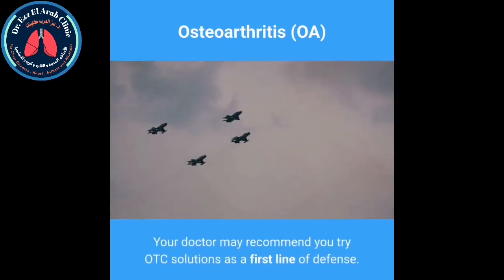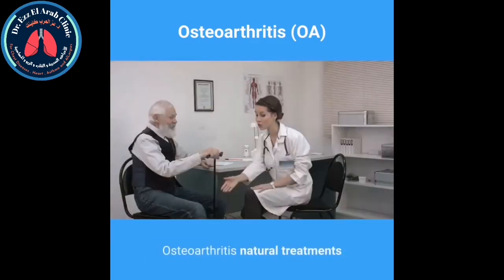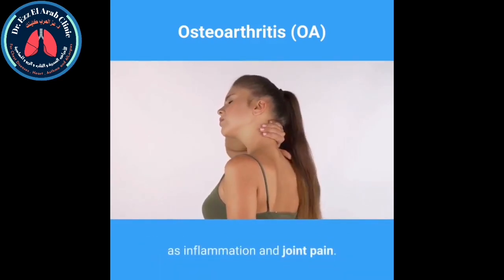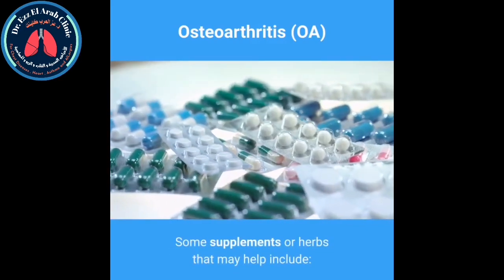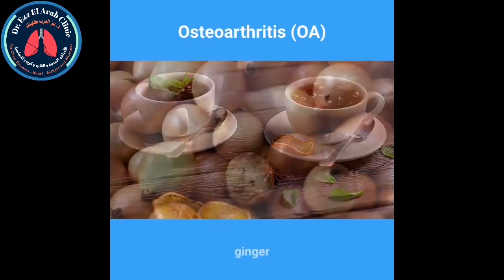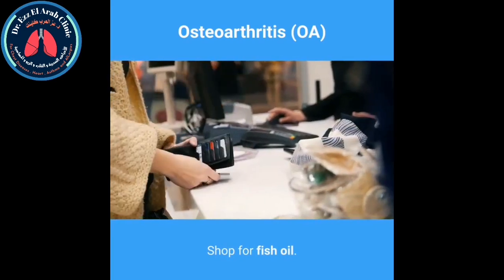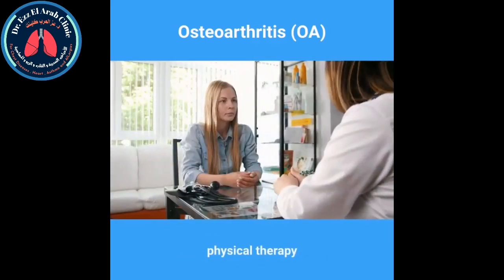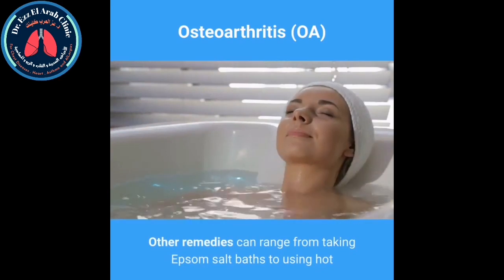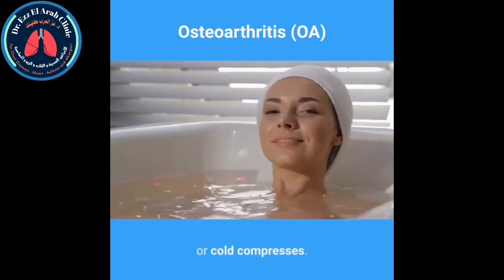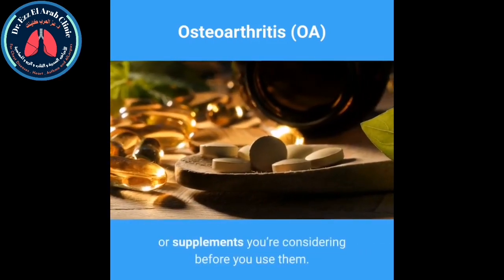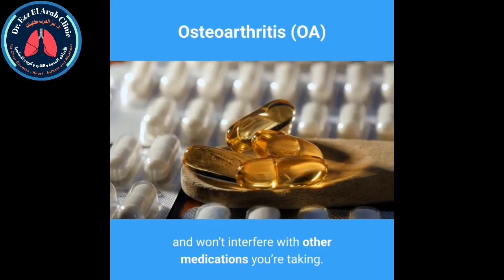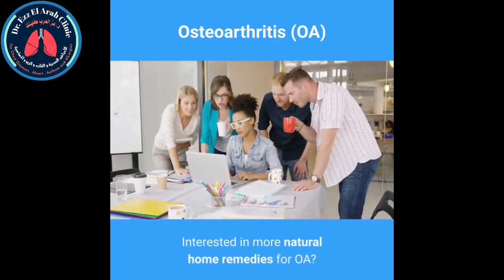Osteoarthritis natural treatments. Alternative treatments and supplements may help relieve symptoms such as inflammation and joint pain. Some supplements or herbs that may help include fish oil, green tea, ginger, and glucosamine. Other alternative treatment options include physical therapy and massage therapy. Other remedies can range from taking Epsom salt baths to using hot or cold compresses. You should discuss with your doctor any herbs or supplements you are considering before using them, to ensure they are safe and effective and won't interfere with other medications.